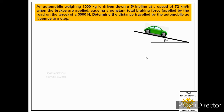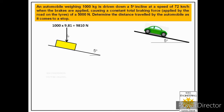To solve this problem, first we draw the free body diagram. We represent the automobile as a block placed on the inclined surface. The first force represented is its weight acting in the vertical downward direction. The mass is given as 1000 kg, so multiplying by 9.81 gives a weight of 9810 Newtons, shown vertically downward in the free body diagram.